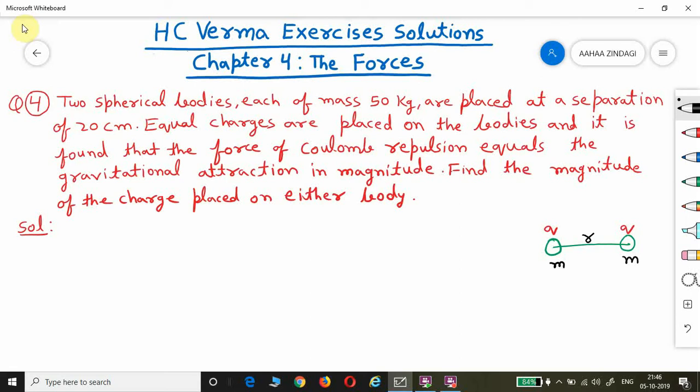The question is: Two spherical bodies each of mass 50 kg are placed at a separation of 20 cm. Equal charges are placed on the bodies and it is found that the force of coulomb repulsion equals the gravitational attraction in magnitude. Find the magnitude of the charge placed on either body.